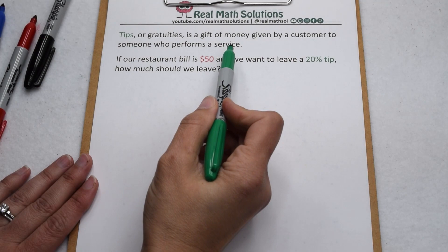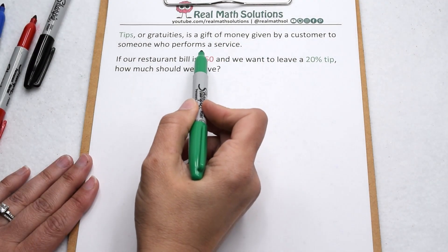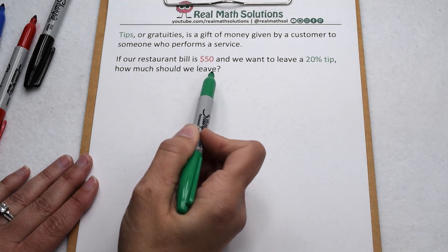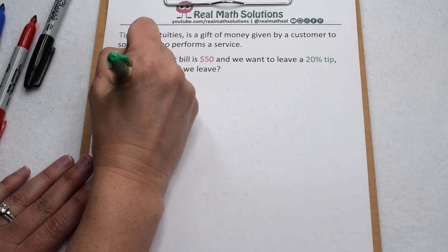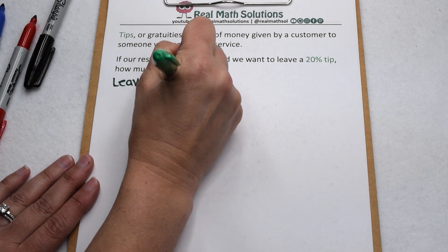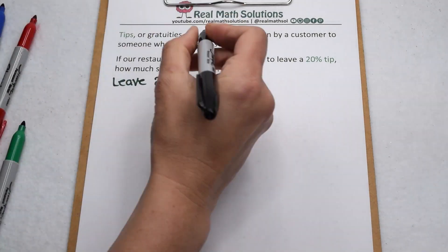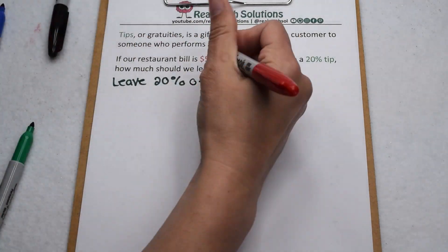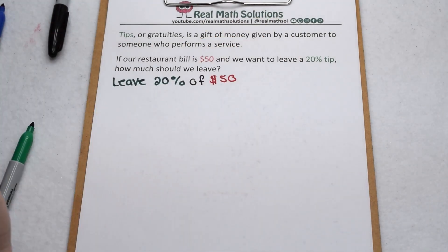Tips, or gratuities, are a gift of money given by a customer to someone who performs a service. So if we're at a restaurant and our bill is $50 and we want to leave a 20% tip, how much should we leave? Let's think about this in terms of percentages — we want to leave 20% of $50.